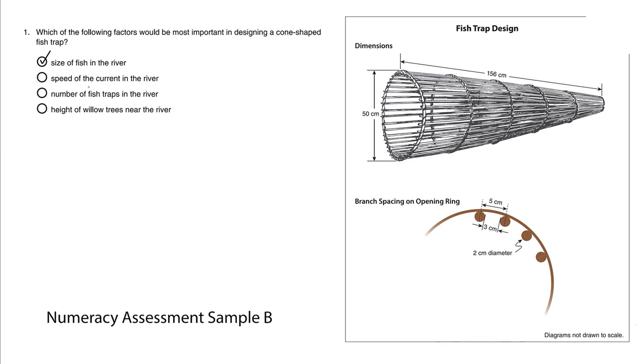Option B: speed of the current in the river. Regardless of how fast the water is, if the size of this trap is ridiculously small or ridiculously large, the current speed is irrelevant.